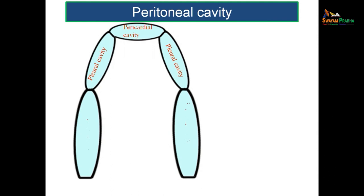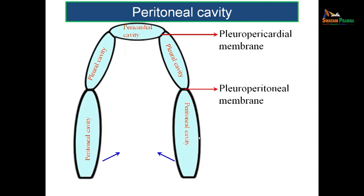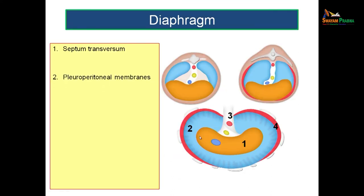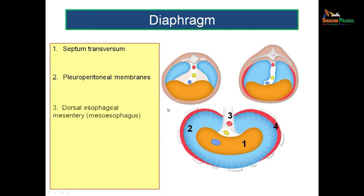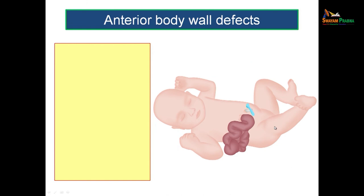The peritoneal cavities, which were initially two separate cavities, fuse together after lateral folding to form a single peritoneal cavity. The diaphragm is derived from many sources. The first one is the septum transversum, said to be the chief source. Then you have the pleuroperitoneal membranes, then the dorsal esophageal mesentery — otherwise known as mesoesophagus — and towards the periphery, the body wall. All these structures give rise to the formation of the diaphragm.